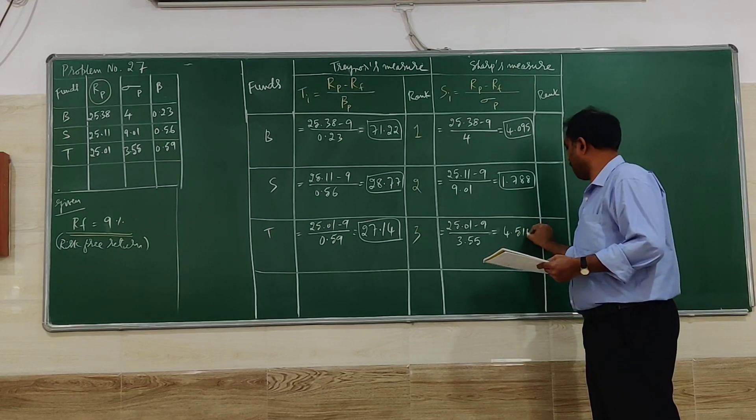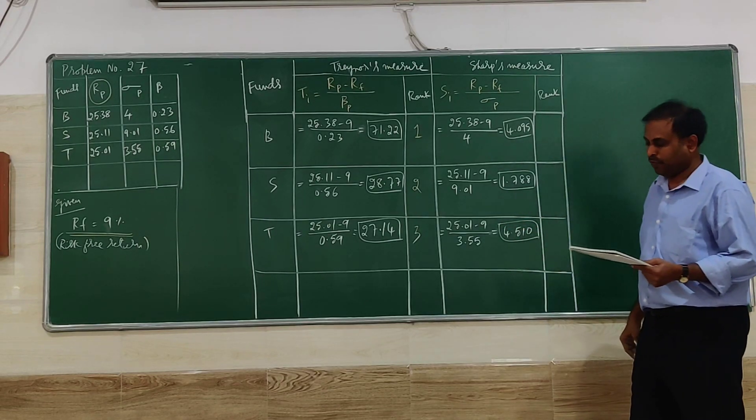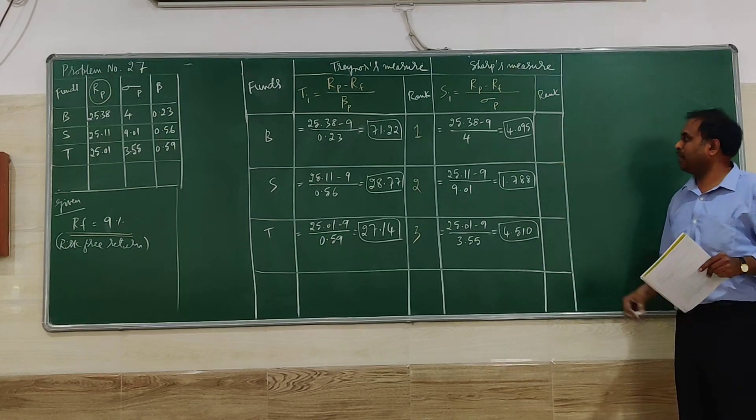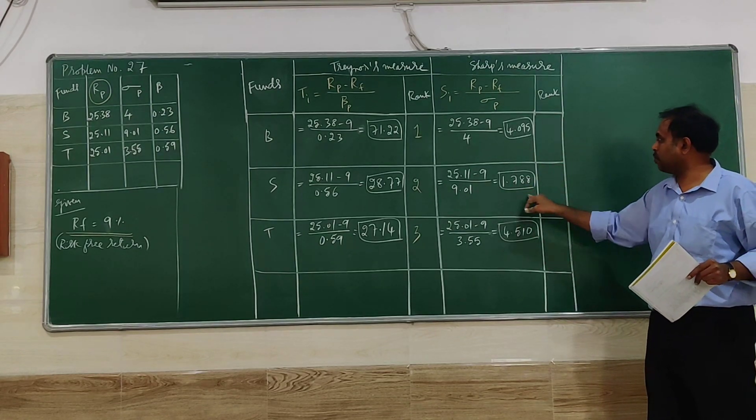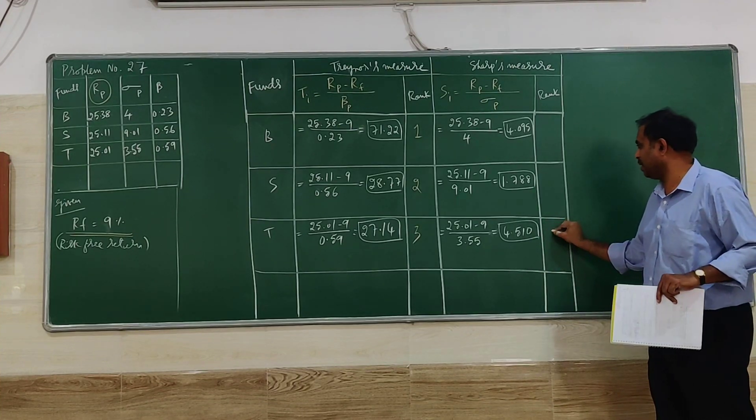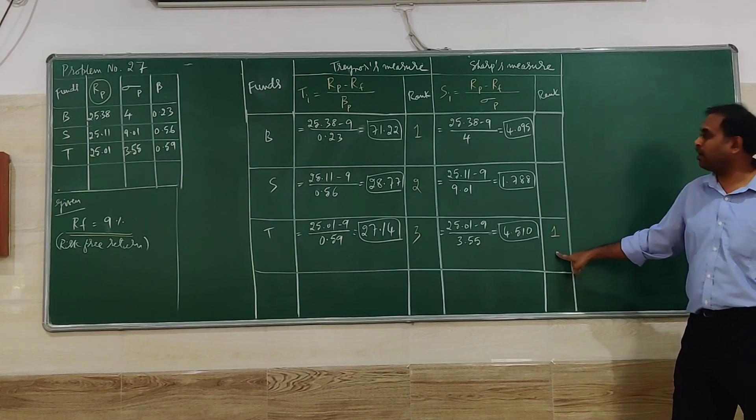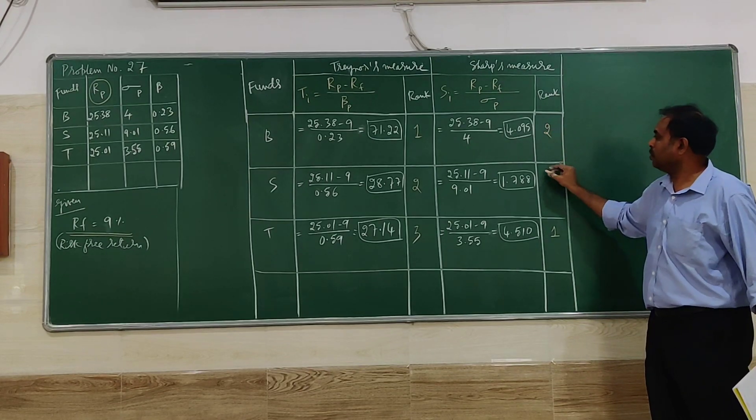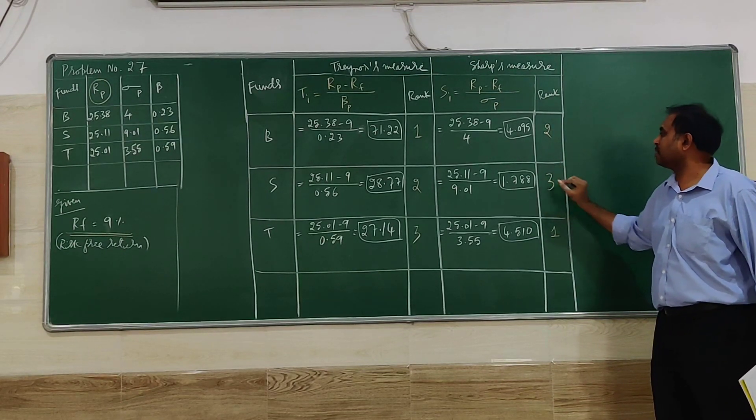If you look at these values, they are different: 4.095, 1.788, and 4.51. So 4.5 is the highest, meaning P will be rank 1, B will be rank 2, and S will be rank 3.